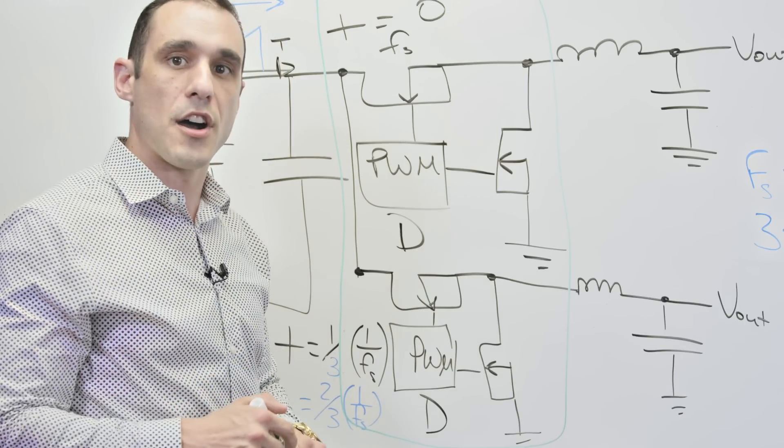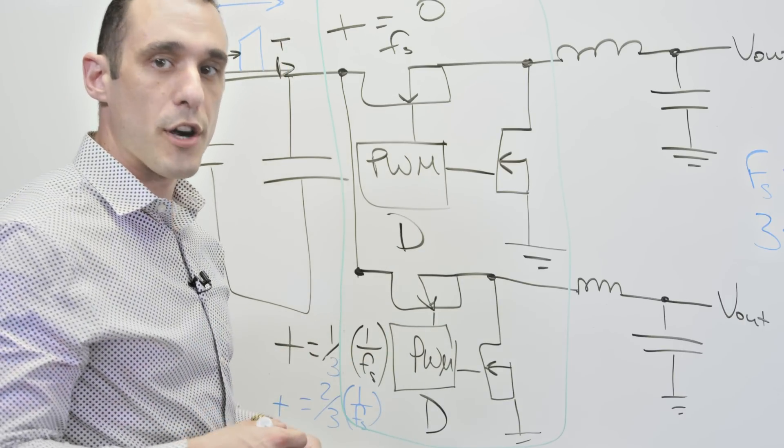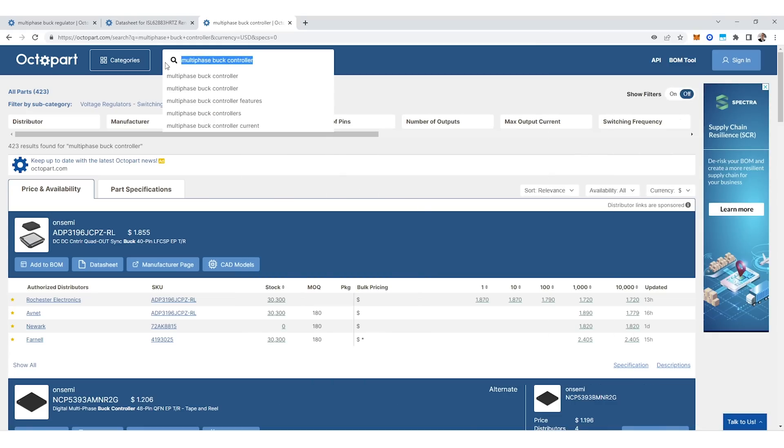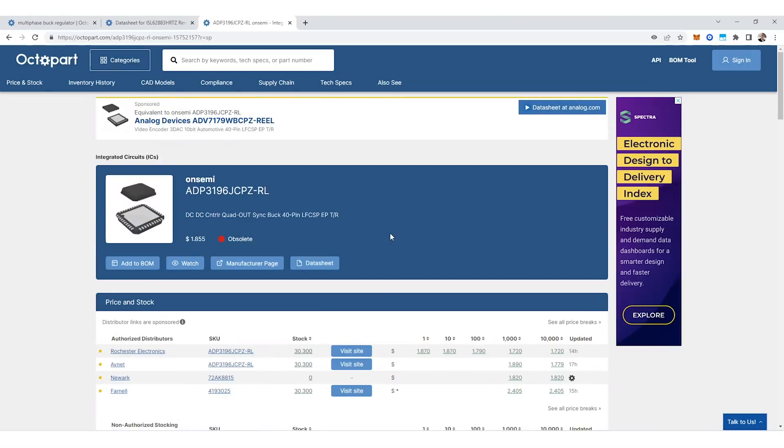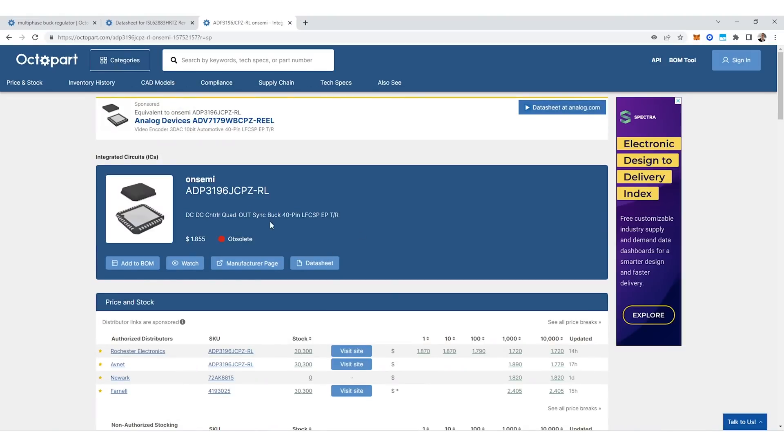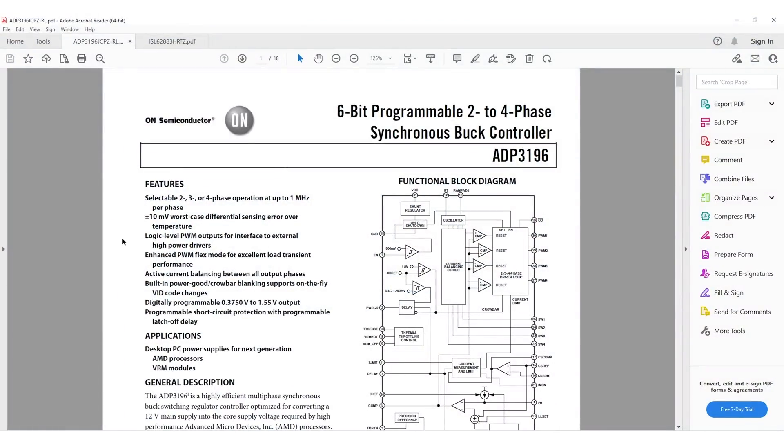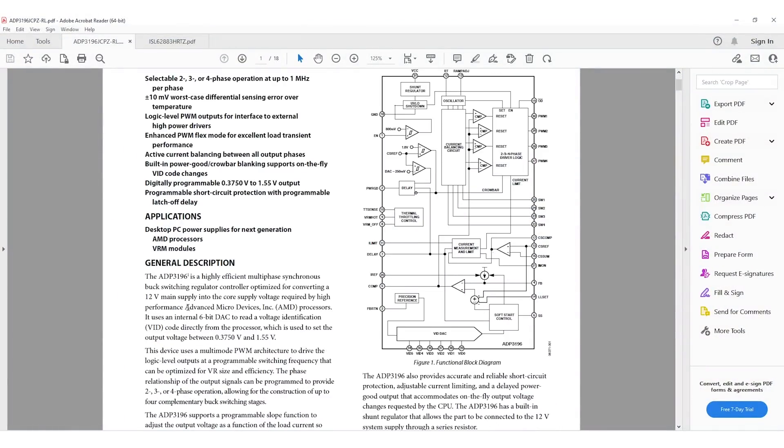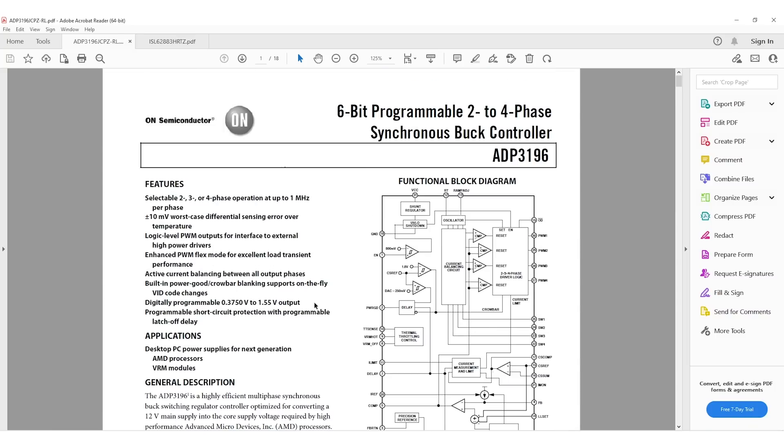So let's take a look at some components on Octopart and we can see what different options are available on the market. So I'm here on Octopart and I pulled up a search for multi-phase buck controller. So this is the type of chip that you would want to use if you had something like external gate drivers. So the first one I want to look at is this On Semiconductor component. Now this one uses from two to four outputs and it's a synchronous buck regulator with multi-phase topology.